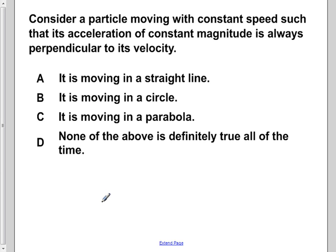Consider a particle moving with constant speed such that its acceleration of constant magnitude is always perpendicular to its velocity. A, it is moving in a straight line. B, it is moving in a circle. C, it is moving in a parabola. Or D, none of the above is definitely true all of the time.